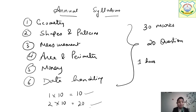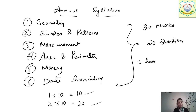So that becomes 30 marks total. This is the paper pattern. Prepare accordingly. This same pattern will be there in each and every subject, so don't get confused while giving the examination.